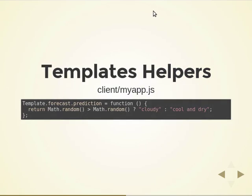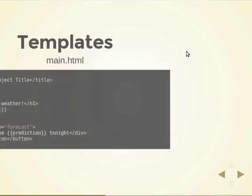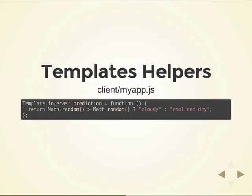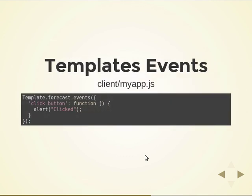Templates have helpers like the prediction helper. Here you can see how we implement helpers. The prediction helper in that case randomly picks one of two values — either cloudy or cool and dry. Whenever you use that prediction helper within the forecast template, this method will run and the actual output will be substituted with the helper.